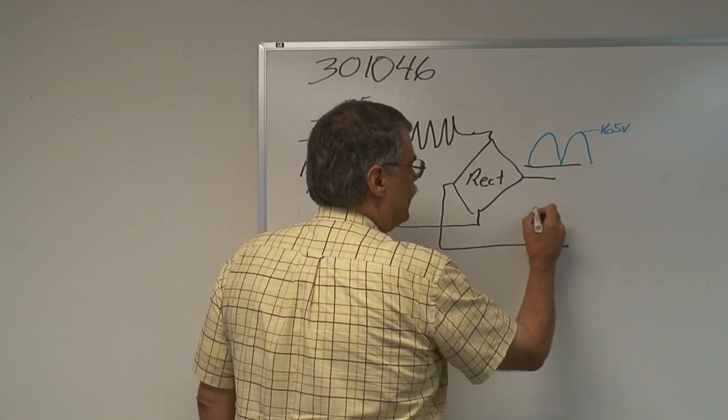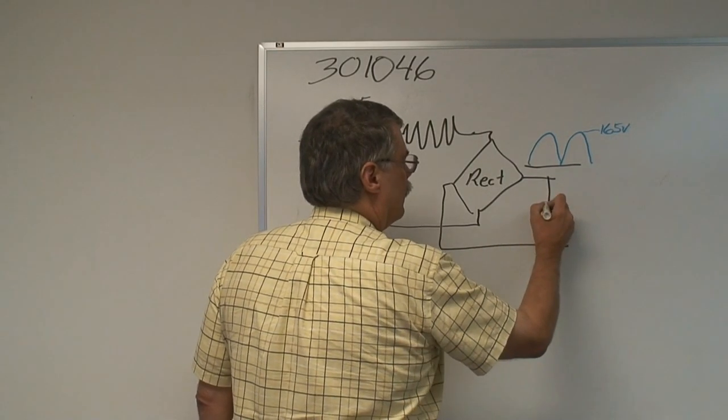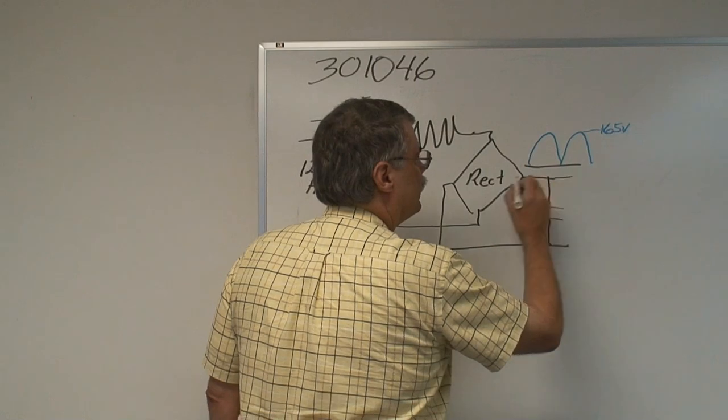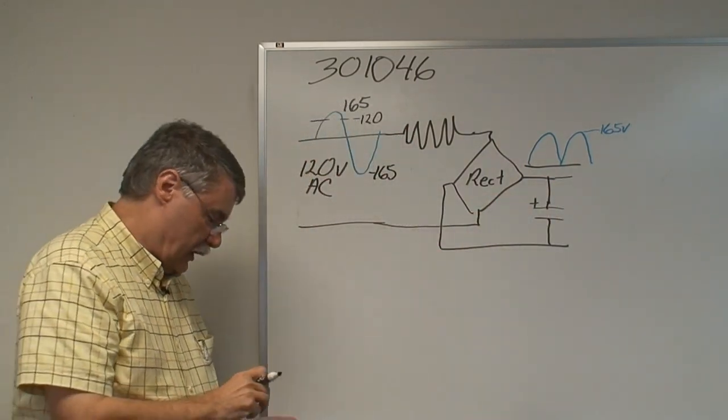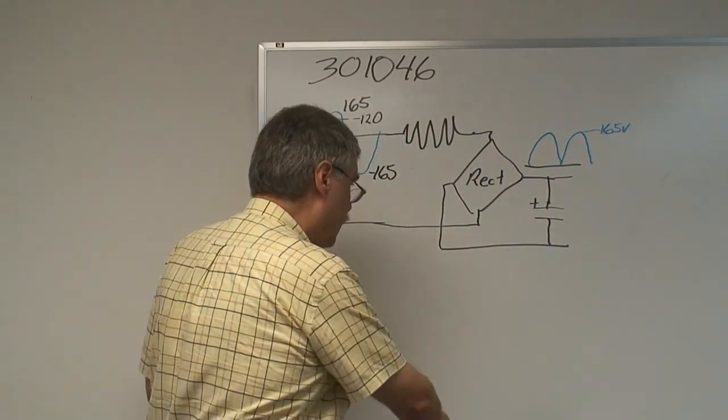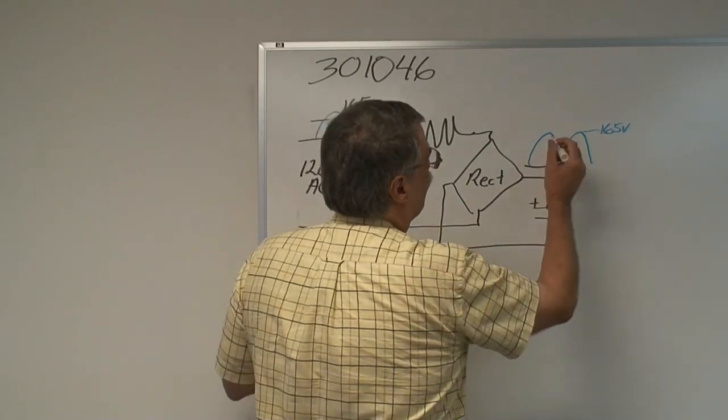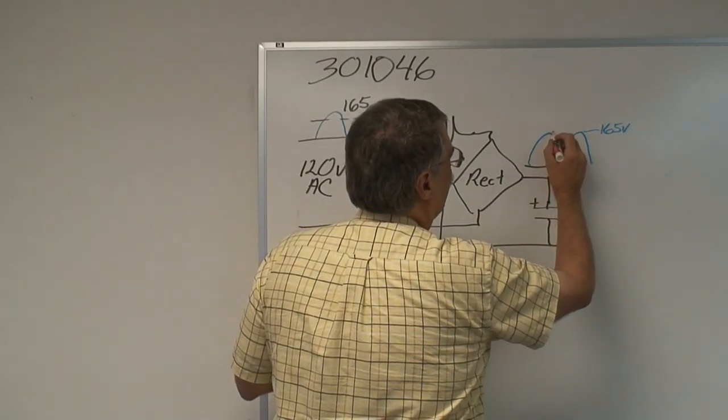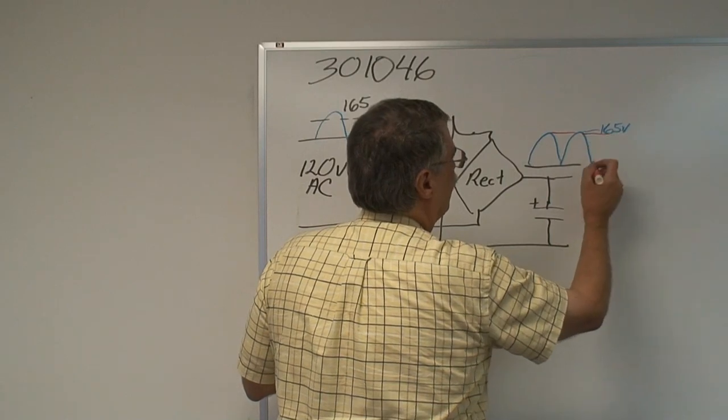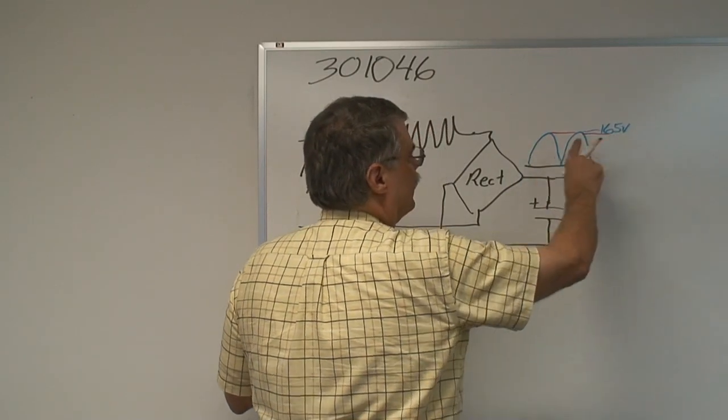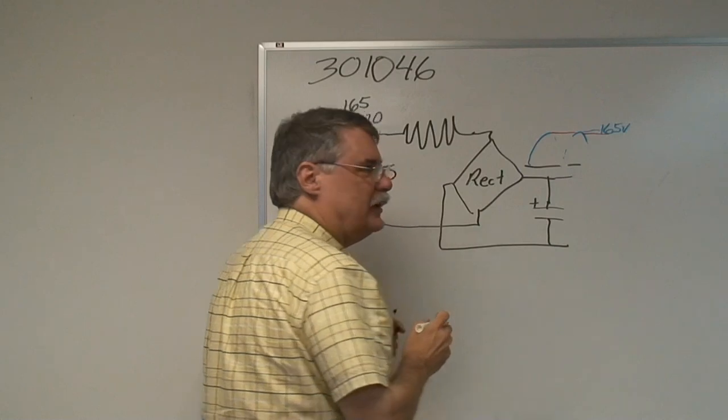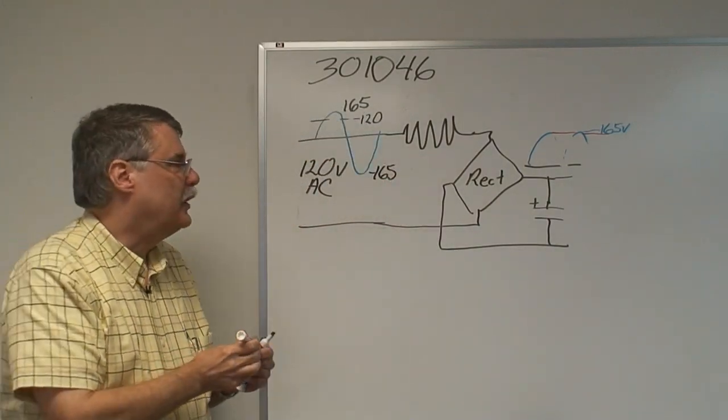We put a capacitor in here to filter the 165 volts, and what the capacitor does is holds up the voltage between these peaks. So we get, instead of a pulsating 165, we just get a flat DC, 165 volts out.